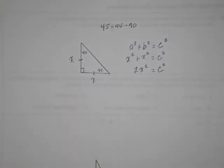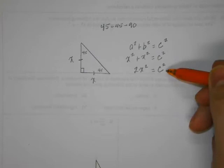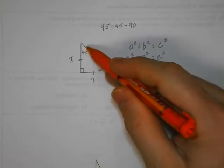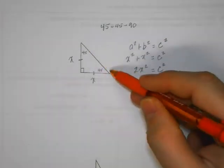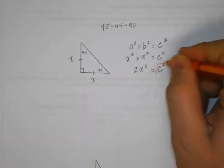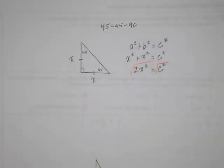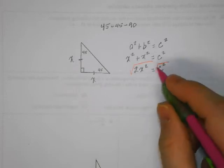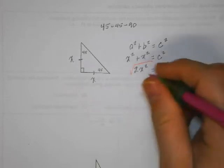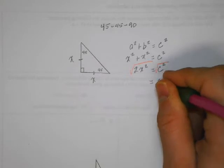On the left side of the equal sign, the two x squareds are like terms, so those combine to give me 2x squared equal to c squared. We want to take the square root of both sides to identify the length of side c. The square root of c squared on the right side is just c.